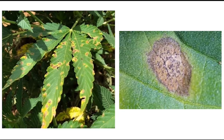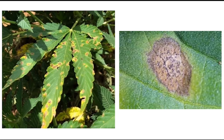Another thing that will help you identify this disease is within the center of these light tan to brown leaf spots you'll see these black specks. These are the fungal fruiting bodies that are used to eject spores into the air whenever environmental conditions are favorable.